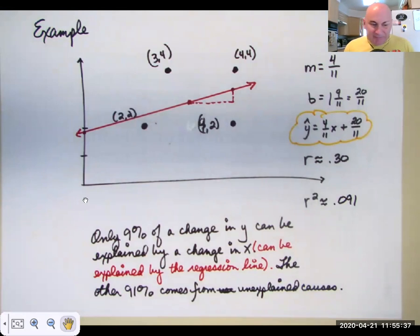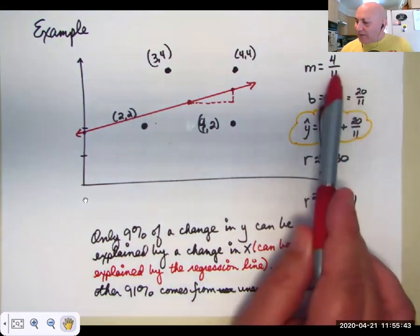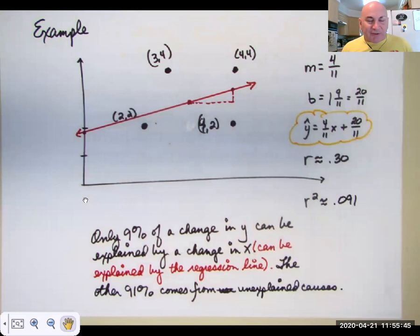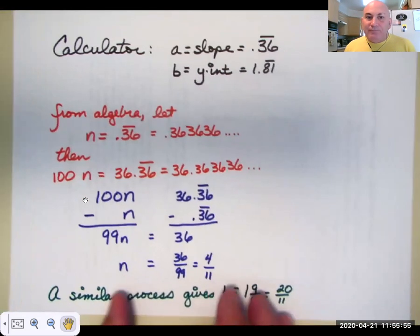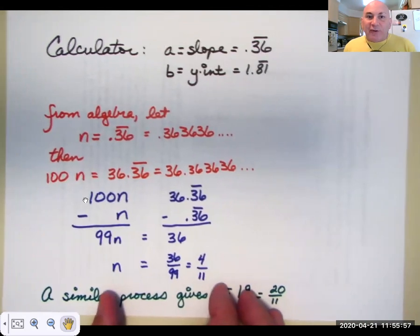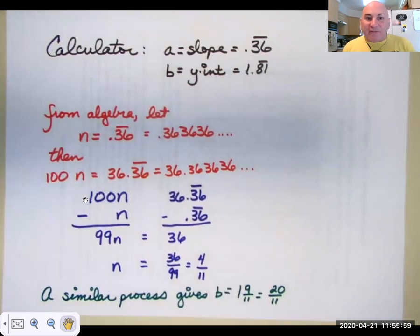Now, some of you might be wondering, because it's been a while since you've done algebra, how did I get 4 elevenths and 20 elevenths as my slope and y-intercept? Well, I'm not going to go through a lengthy explanation of that. I'm just going to show this to you here. Please feel free to stop the video, follow along.